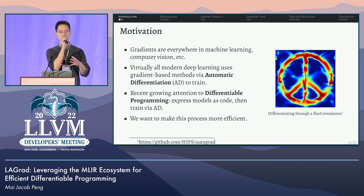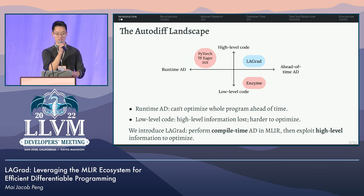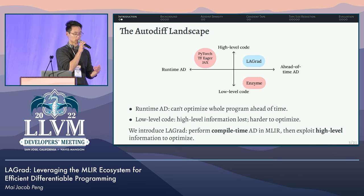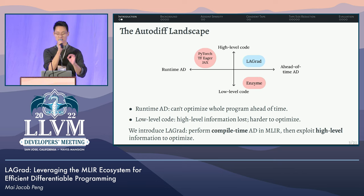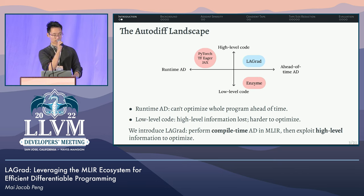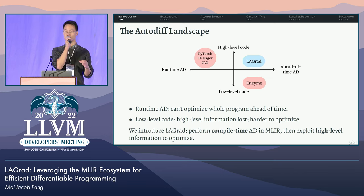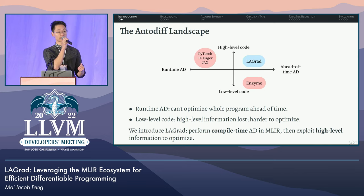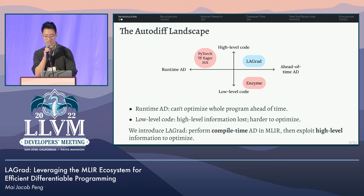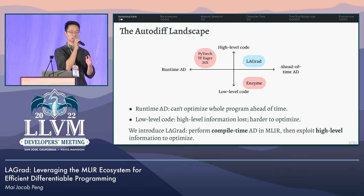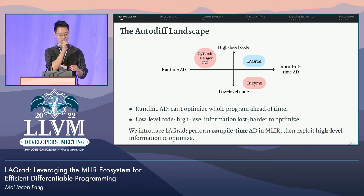The goal of my work is to make the process of computing gradients more efficient in terms of both runtime and memory consumption. This is how our work positions itself in the existing auto-diff landscape. The most popular AD methods today perform runtime AD — the disadvantage is that you can't optimize ahead of time through an optimizing compiler to the same degree. These include PyTorch, TensorFlow eager, and JAX. Another important point is Enzyme, which is a state-of-the-art AD tool that performs automatic differentiation on very low-level LLVM IR. The disadvantage is that LLVM IR quickly gets very complex, making certain optimizations challenging. Our tool is LA Grad, which is a source-to-source automatic differentiation system — it performs compile-time AD and exploits high-level information in the generated code to produce more optimal code.